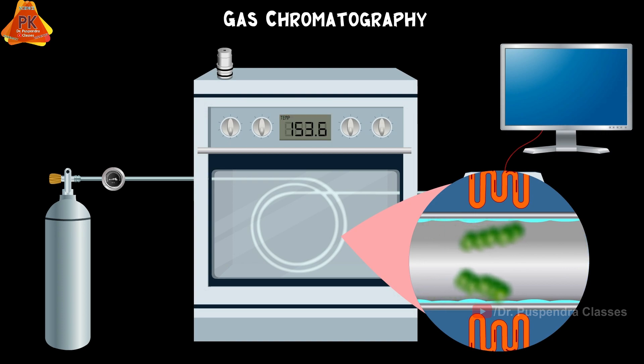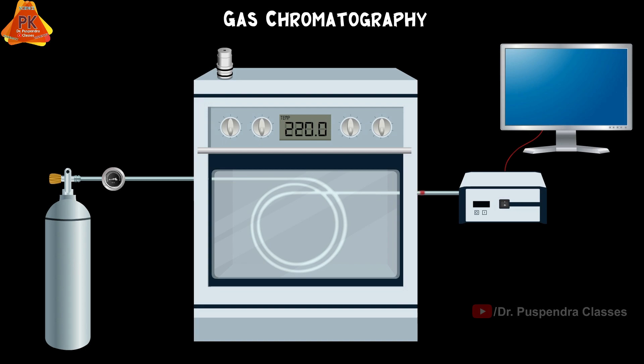Some compounds have very high boiling point and are not eluted in normal conditions. In that case, we can increase the temperature of oven and increase the elution rate. This gradual increment in temperature is called temperature programming.